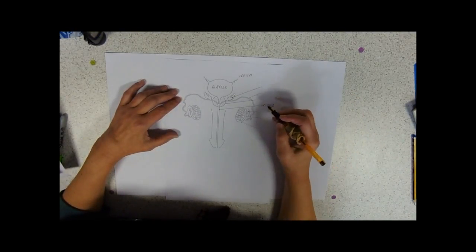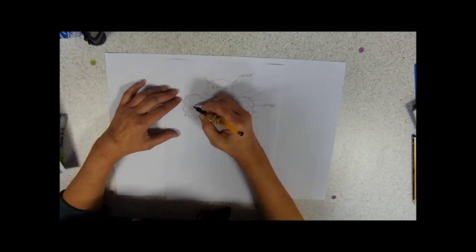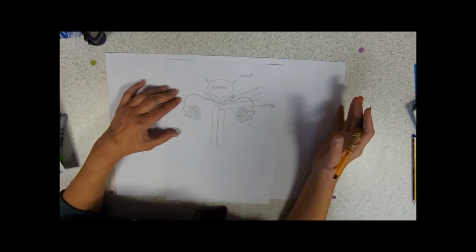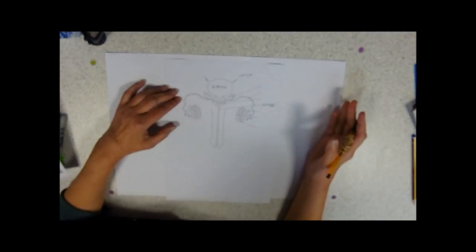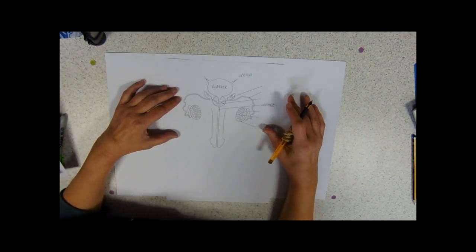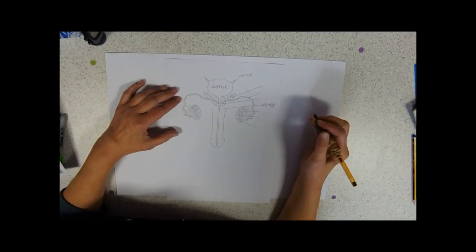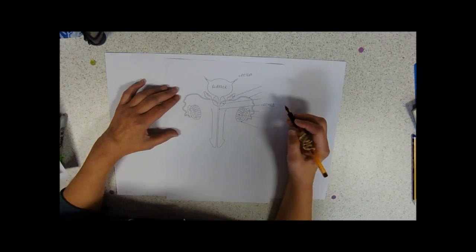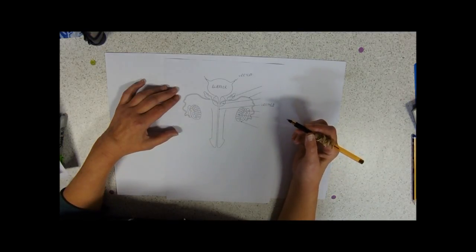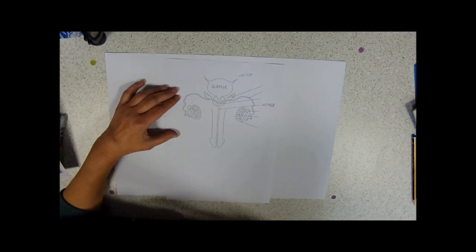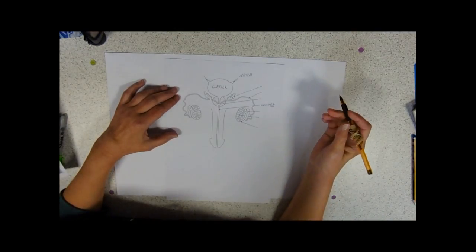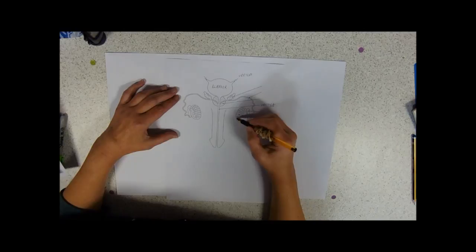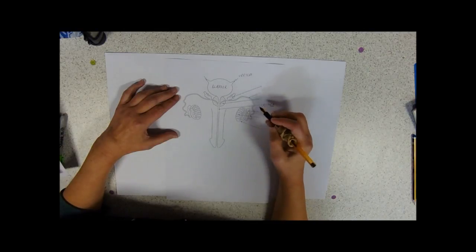So the urethra is leading to the outside from both the bladder and from these structures down here, the testes. Just to put it into context of what happens here, these are the testes and these are involved in spermatogenesis, so they're involved in sperm production. They're also involved in testosterone production, and they're held outside of the body in a scrotal sac. The reason that they're held outside of the body is that these spermatozoa need a lower temperature than body temperature in order to develop.